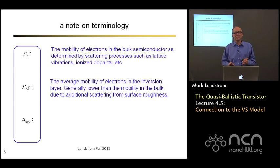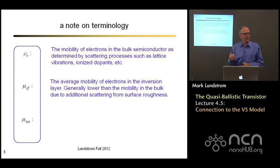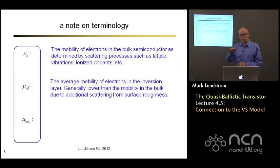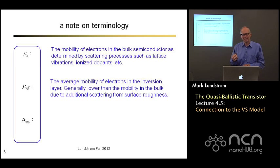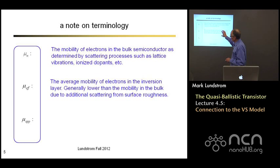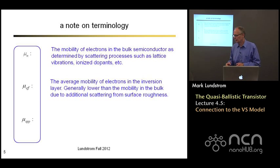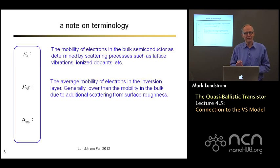Then there's something the MOS community calls the effective mobility. This is a real mobility, but it's the mobility of electrons in the inversion layer. It depends on scattering off the roughness of that interface, as well as all other scattering processes present in the bulk. It depends on how close the electron is to the interface — the closer it is, the more it scatters. So it's a depth-averaged real electron mobility, and in general it's quite a bit less than the bulk mobility because silicon interfaces tend to be microscopically rough and induce a lot of scattering.